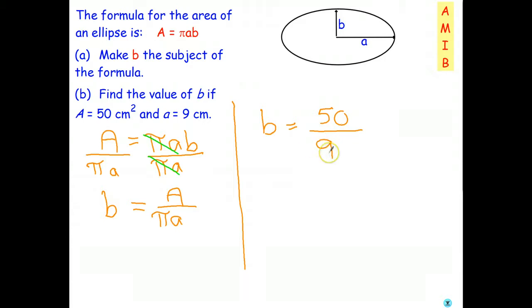Sorry, excuse me. Backspace on that one. I write pi times 9. And I get out my calculator. And to three decimal places, I will get B equals 1.768. You might want to check that on your calculator. Make sure you can do that.